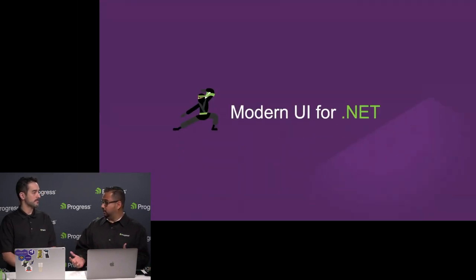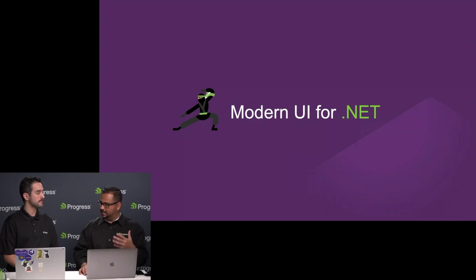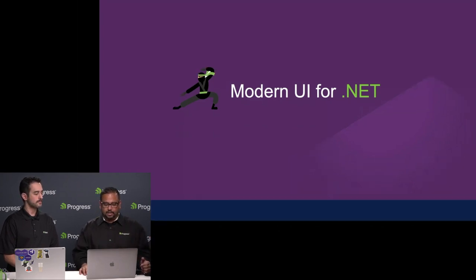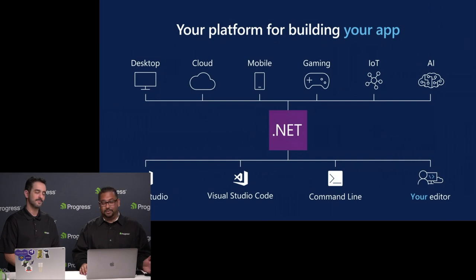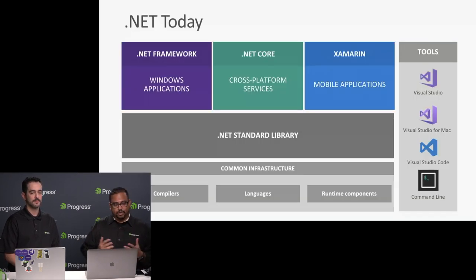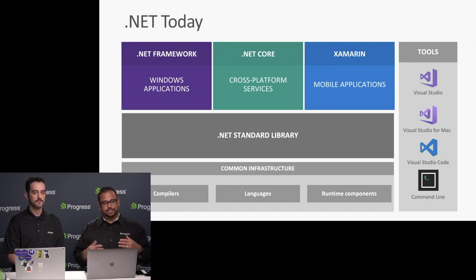We are going to talk about all things .NET today. The Telerik side of the family is mostly about equipping .NET developers to do the best we can, no matter what type of app you're building. The .NET of today is not the same .NET as we knew five or ten years back — you can really target just about any platform. You have .NET Framework, .NET Core, and Mono, and the tools of our trade have really evolved.